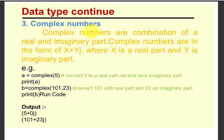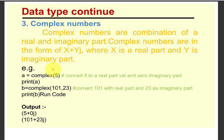Next is complex number. This is the third type of number data type, that is complex number. First, understand what is the complex number. Complex numbers are a combination of a real and imaginary part. Complex numbers are in the form of x plus yj, where x is the real part and y is the imaginary part.